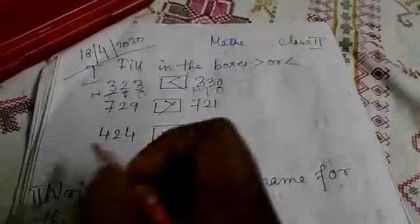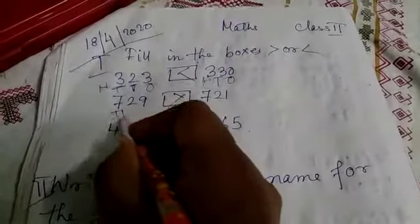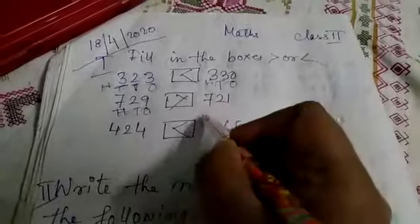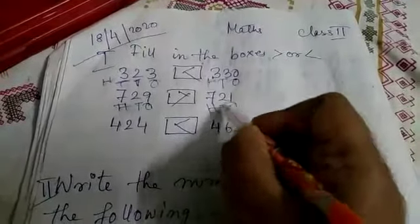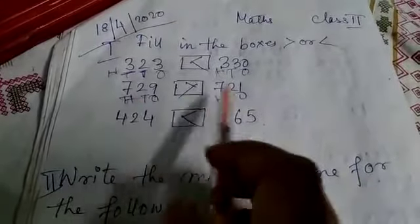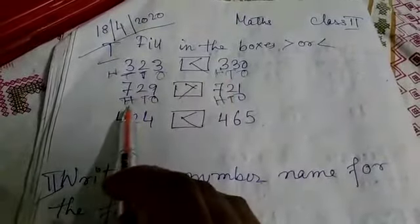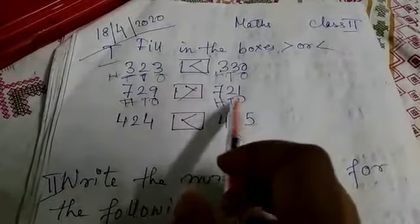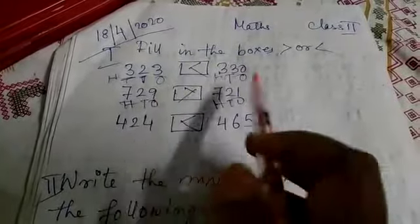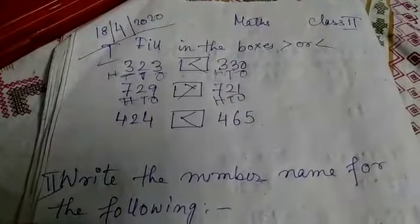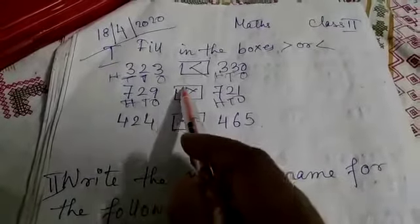Again in this, this is hundreds place, tens place, ones place. Hundreds place, this is 7, this is 7. Both the places are the same. Tens place, this is 2, this is 2, same. Ones place, this is 9, this is 1. So, this is more. Therefore, this side is greater.